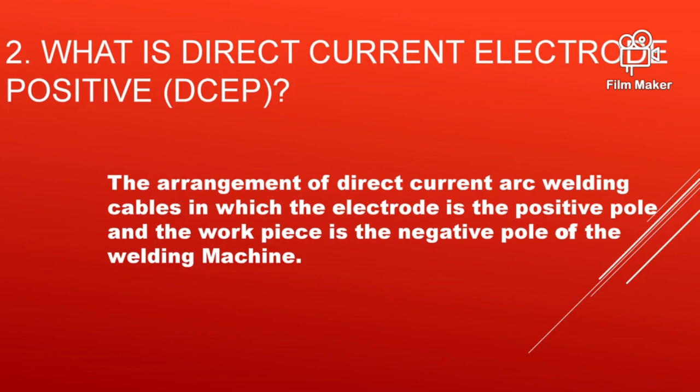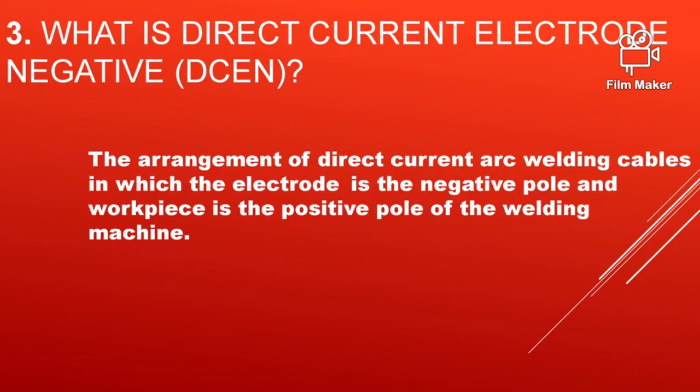What is Direct Current Electrode Positive, that is DCEP? It is the arrangement of direct current arc welding cables in which the electrode is the positive pole and the workpiece is the negative pole of the welding machine. In this polarity, we will get a higher deposition rate.